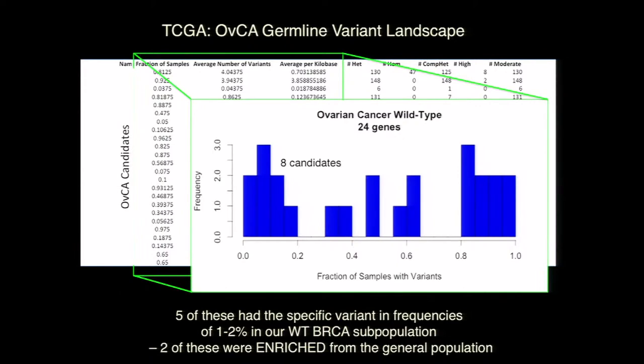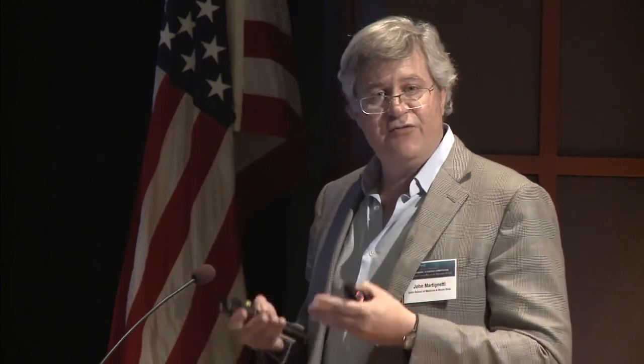Using the BRCA wild type samples among these 160 samples, we could look at the number of samples that had the same mutations as in our Family 311. Five of these eight genes actually had the same specific variant in the TCGA germline dataset, present in about one to two percent of this population. Two of these, when we looked at the 1000 Genomes database, had an actually increased frequency in TCGA with a p-value of 0.02. With more samples, we could probably increase the confidence.